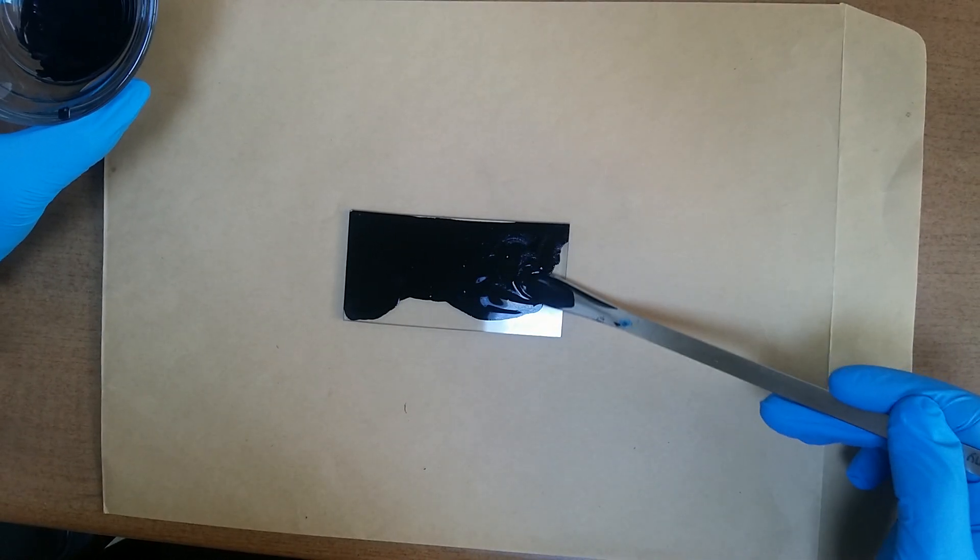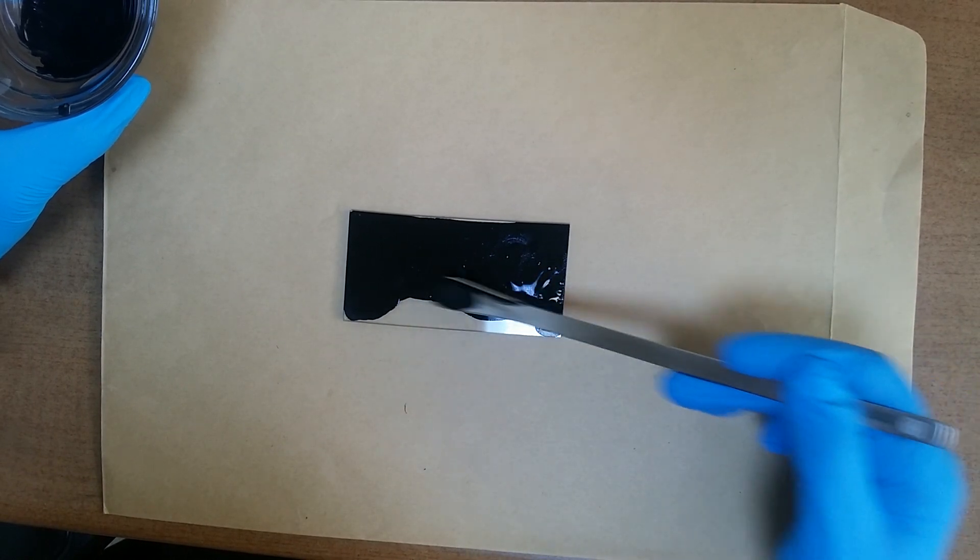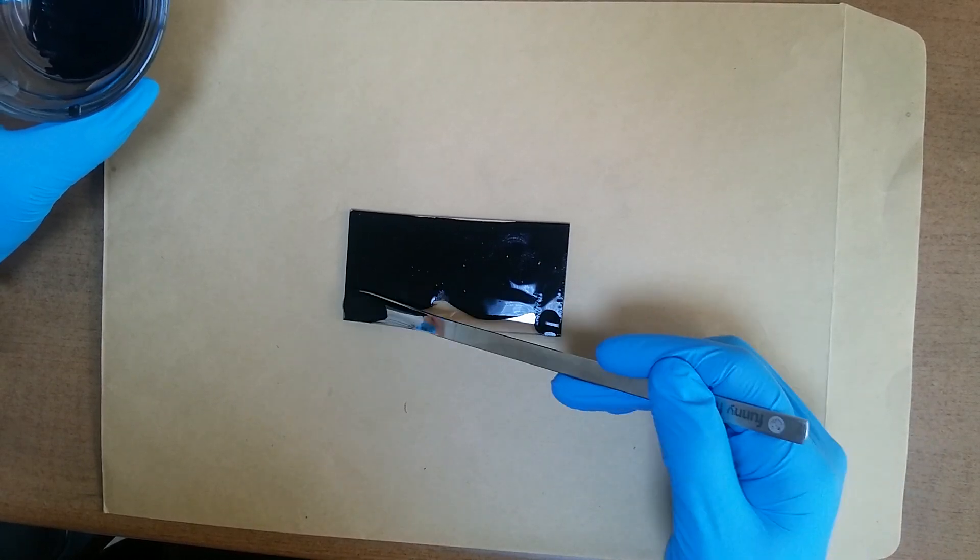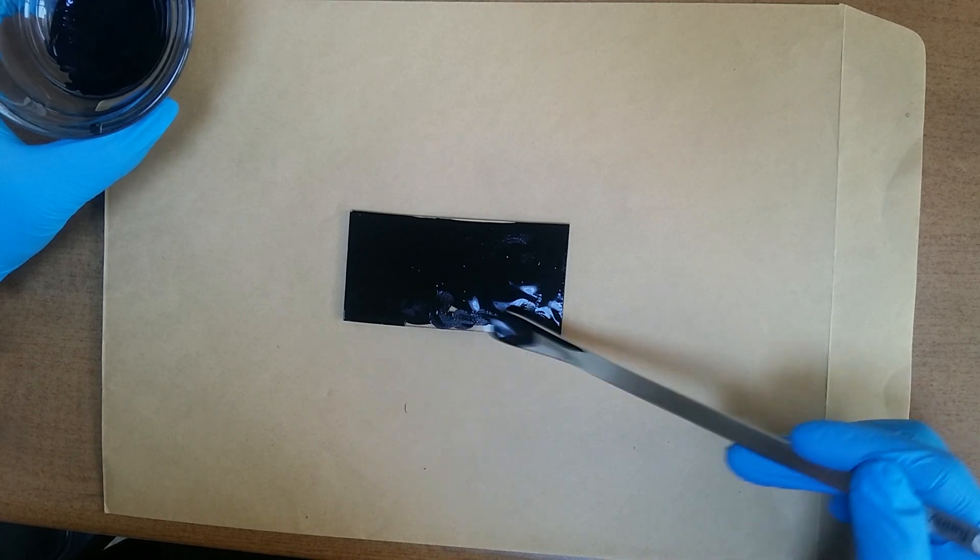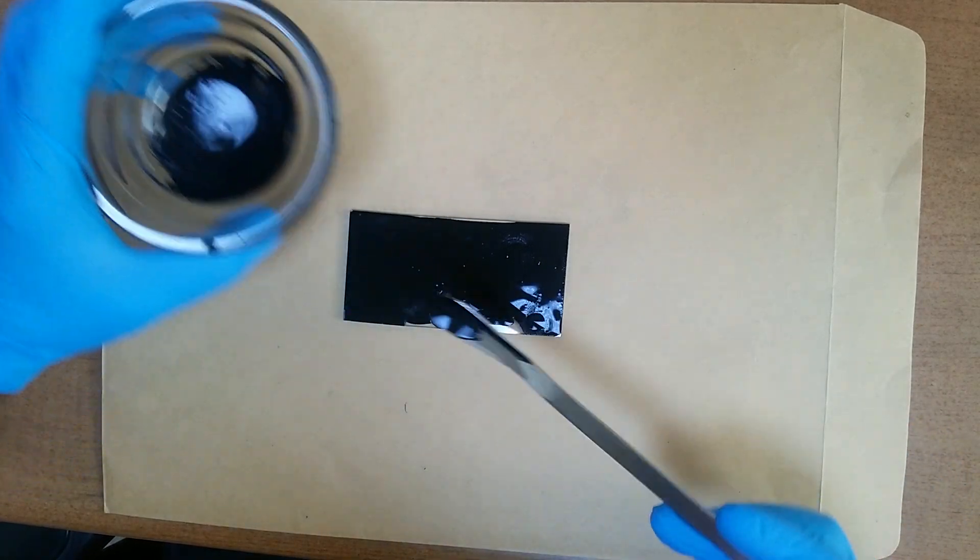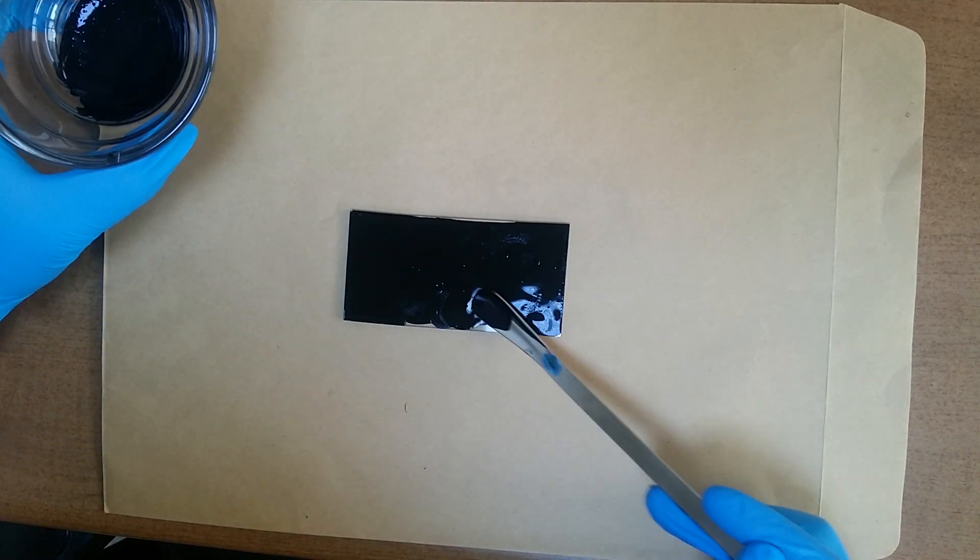By using scotch tape, we can get graphite, but the problem is how to make it larger to satisfy our demand.